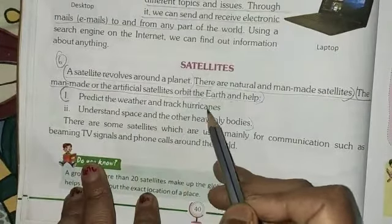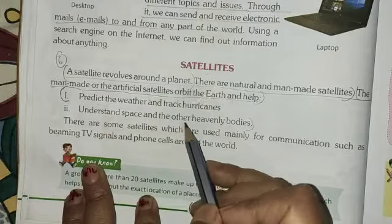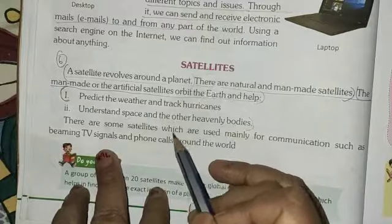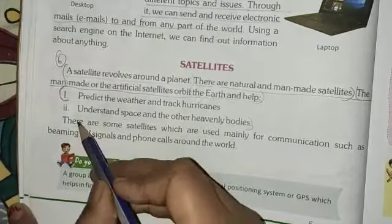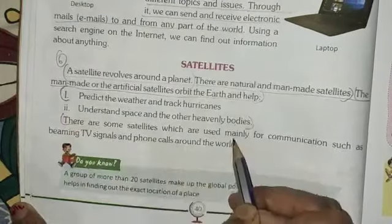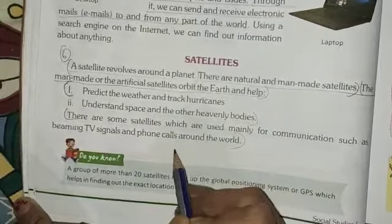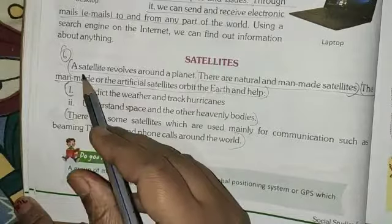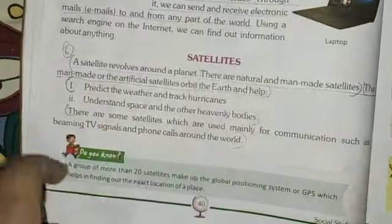Predict the weather and track where it is. Then, understand space and the other heavenly bodies. These are the uses of satellites. And this also you will add one more point here: TV signals and phone calls around the world. So three points you have to write in this question. This is our question number 6.